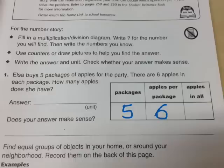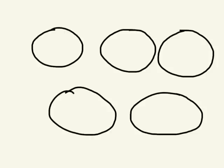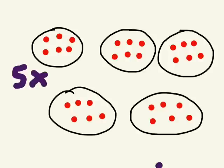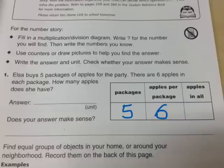Now I'm going to draw a picture to see what this looks like. First, we need five packages of apples — here they are, five packages of apples. And we need six apples in each package. Here are the six apples in each package. Now you need to figure out how many apples there are all together. You could do six plus six plus six plus six plus six, or if you know your multiplication, you could just try five times six or six times five, and that will give you your answer.